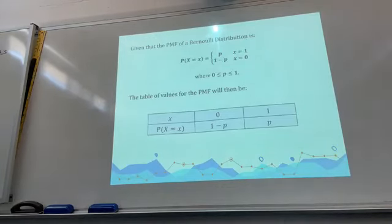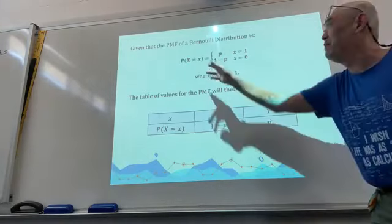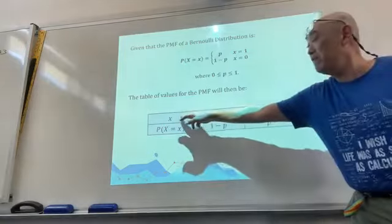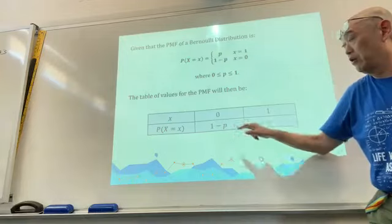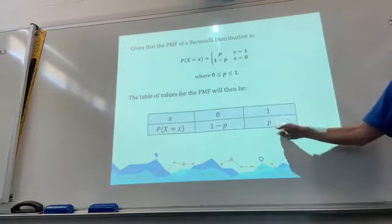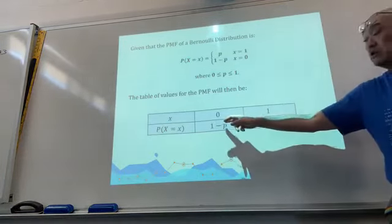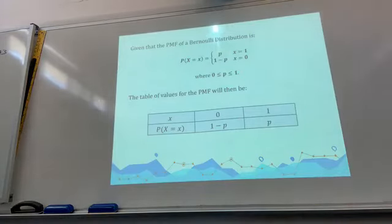Given that the probability mass function of the Bernoulli distribution is that, the table of values for the probability mass function could be written as, if X equals 0, which is not successful, is 1 minus P or Q. When X is successful, that is P. So it's only P and 1 minus P. Like I said, it's a unique case, on or off, happening or not happening.